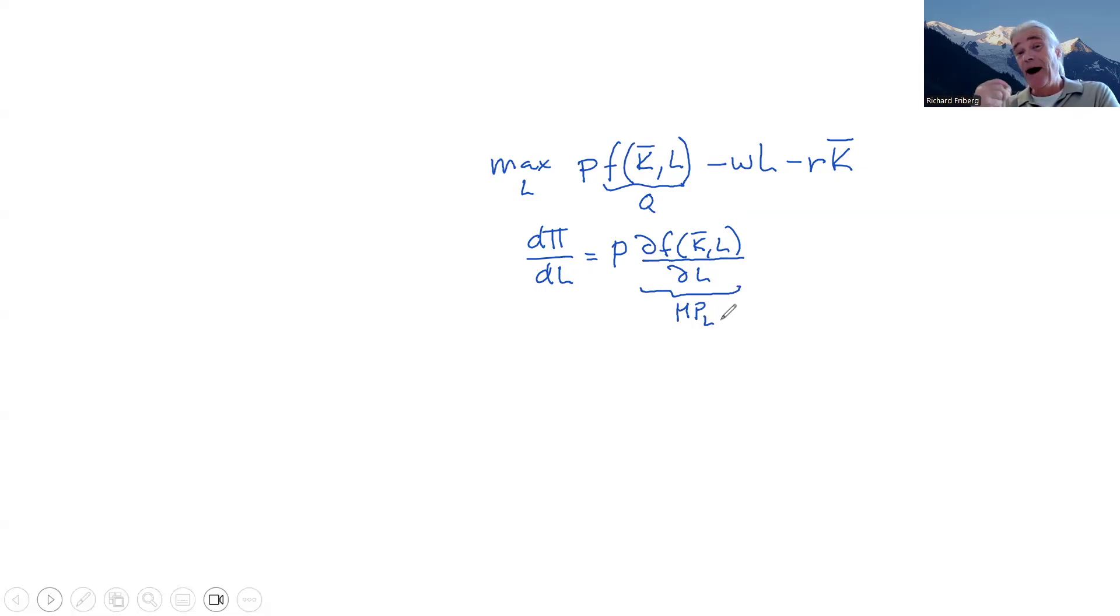Another word of describing that is, this is what we call the marginal product of labor. By hiring a bit more, how much more stuff, how much more goods am I producing? That's a marginal product at the margin. So this will be the value of hiring an additional worker. How much more am I producing because I hired this additional worker? And what can I sell that additional output for?